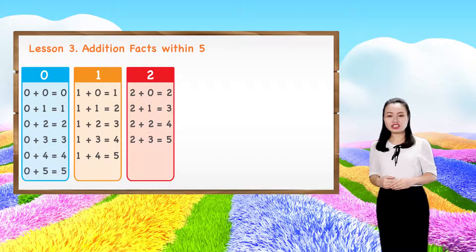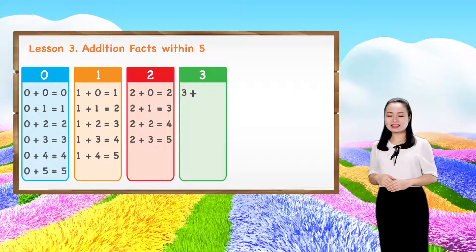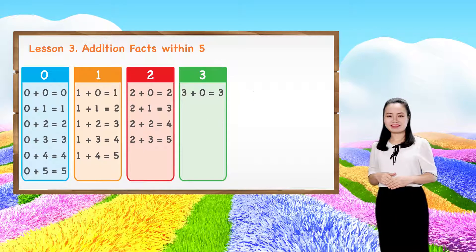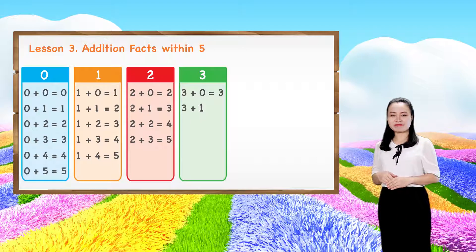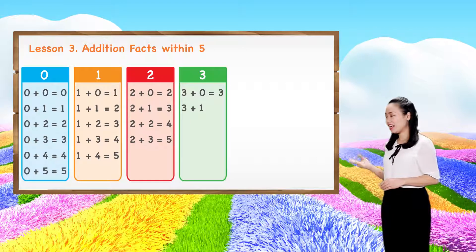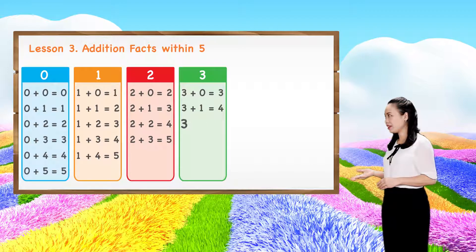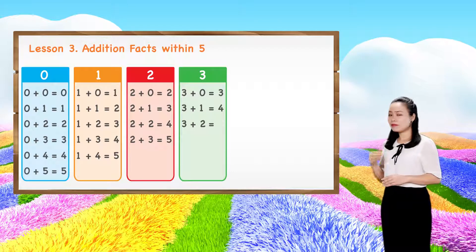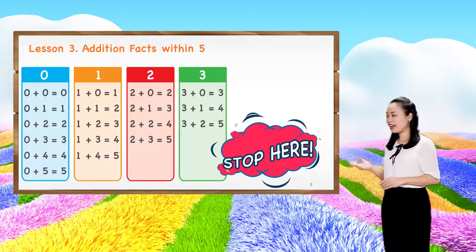Next, let's learn addition by threes. 3 plus 0 equals 3. 3 plus 1 equals 4. 3 plus 2 equals 5. We'll stop here for now.